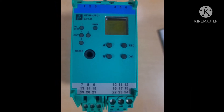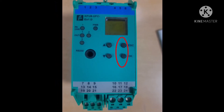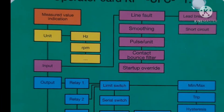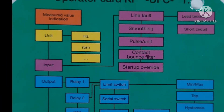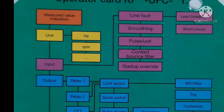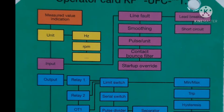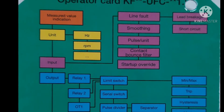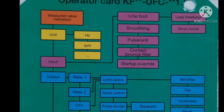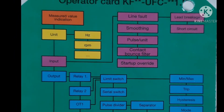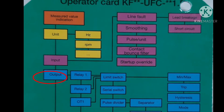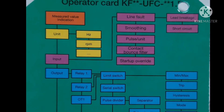First step: press OK and escape together for 1 second. Your window will show 'unit'. Press the down button — your window will show 'input'. Press down button again and your device will show 'output', then press OK.